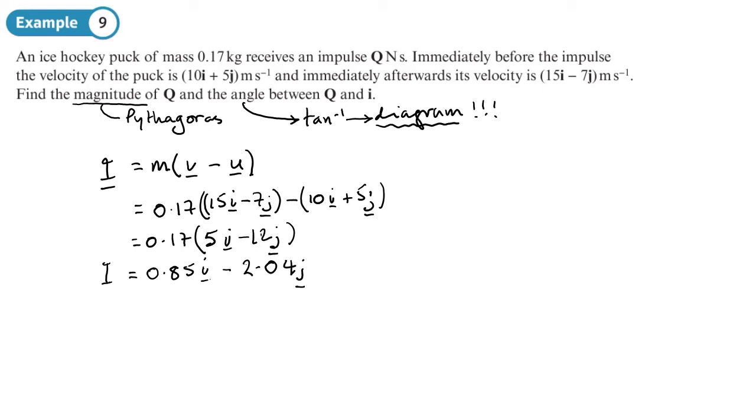The magnitude of i is what we're going to do Pythagoras on. So 0.85 squared plus 2.04 squared. Let's do that. Square root of 0.85 squared plus 2.04 squared, 221 over 100, which is 2.21. So that's the magnitude, 2.21 newton seconds.